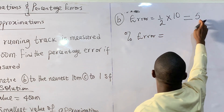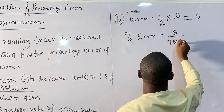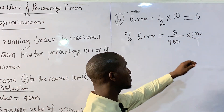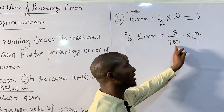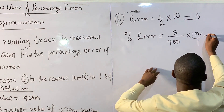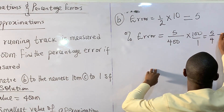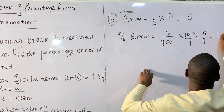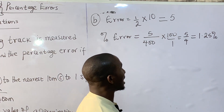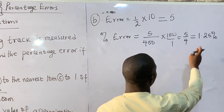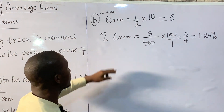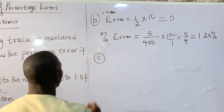The percentage error for question (b) is the error of 5 divided by the actual value of 400, times 100 over 1. This is the same as 500 over 400, or 5 over 4, which equals 1.25%. So the percentage error for question (b) is 1.25%.